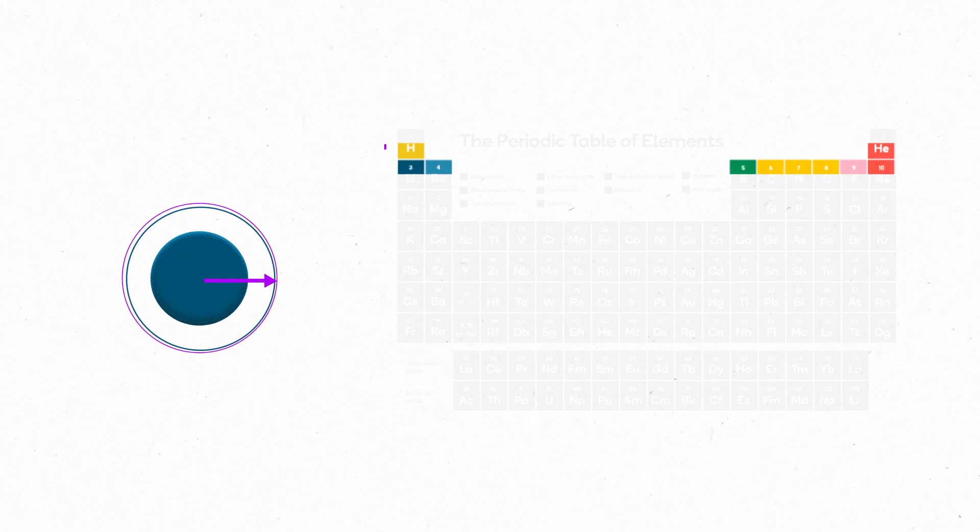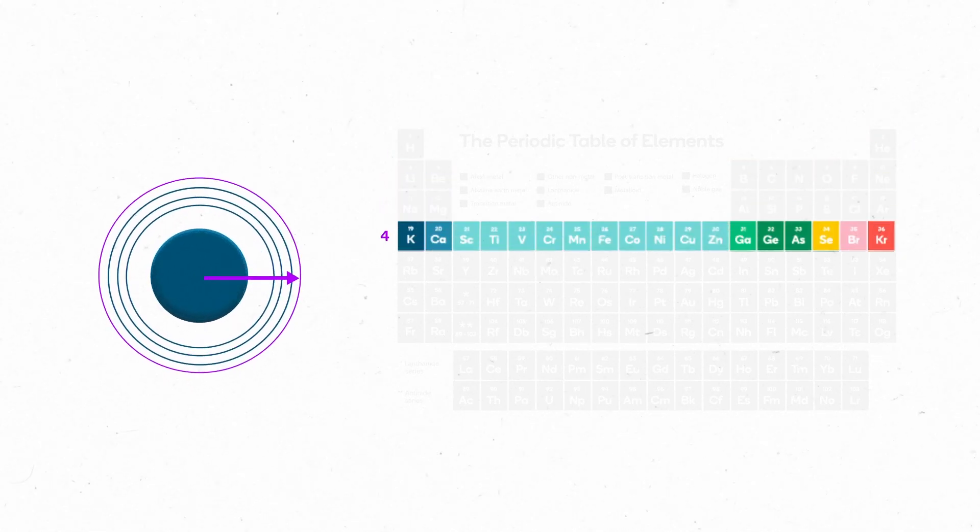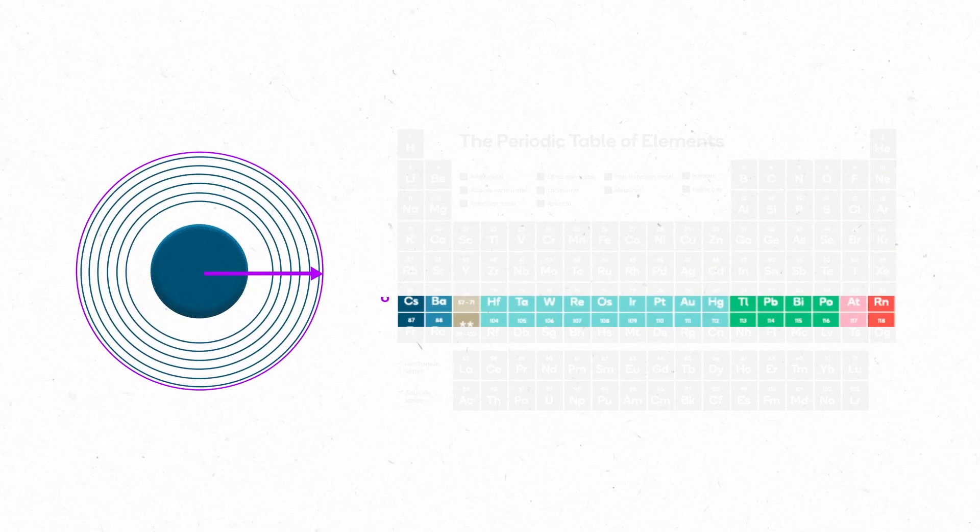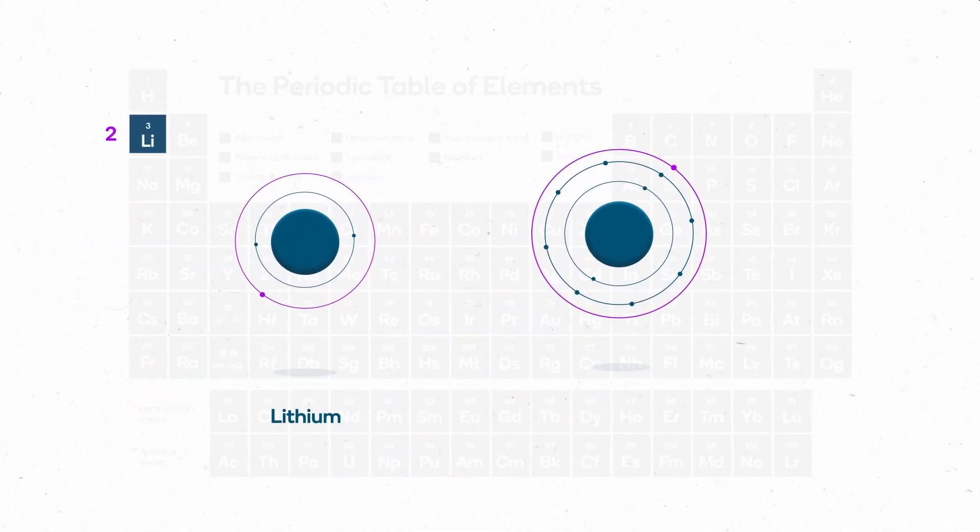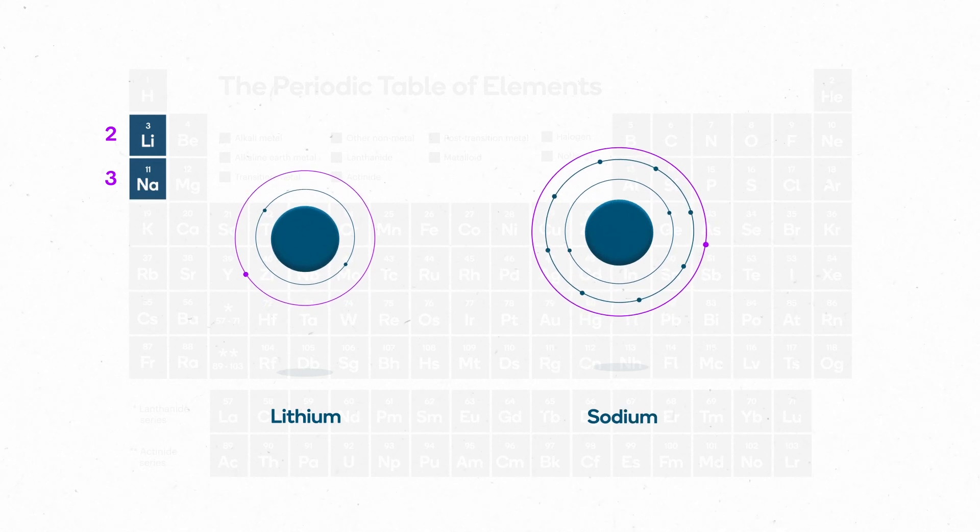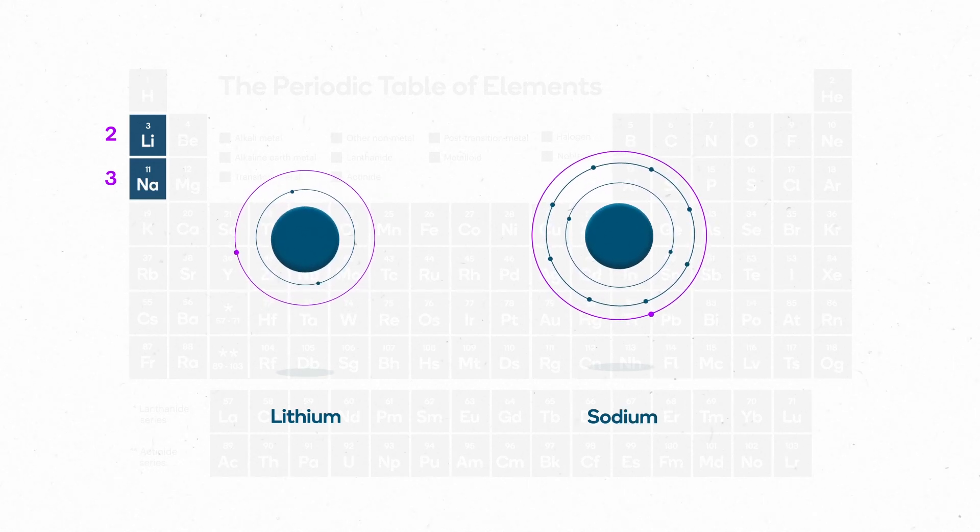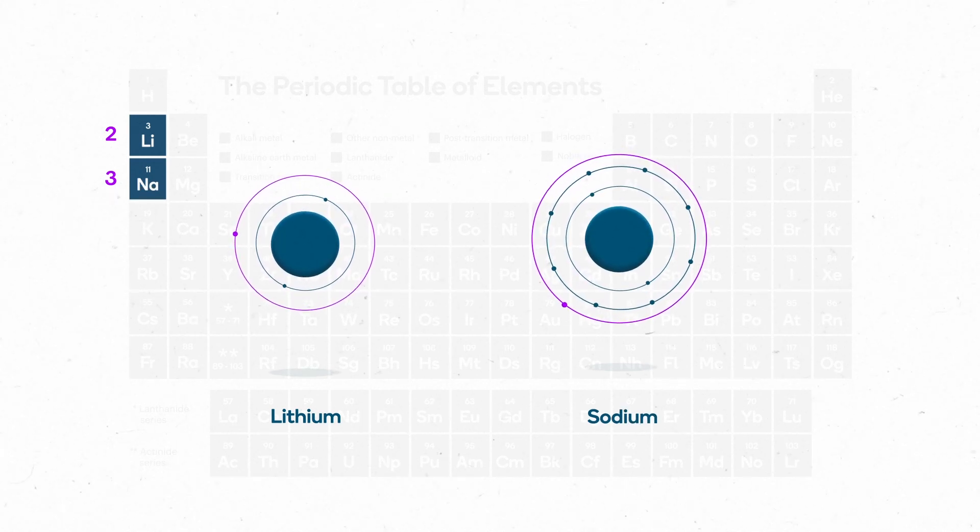Atomic radius increases down each group in the periodic table as each electron shell is filled. For example, lithium has two shells containing electrons, while sodium has three. Sodium's valence shell is further from the nucleus, so it has a larger atomic radius.